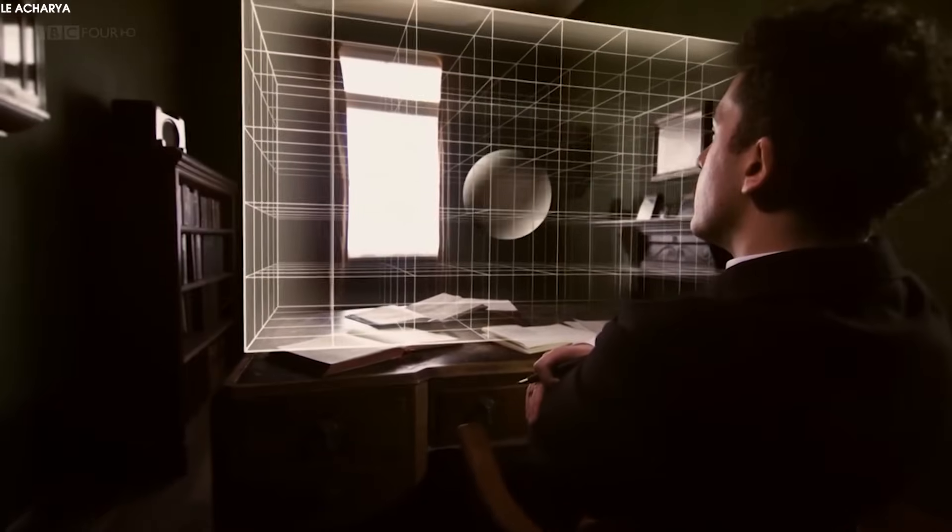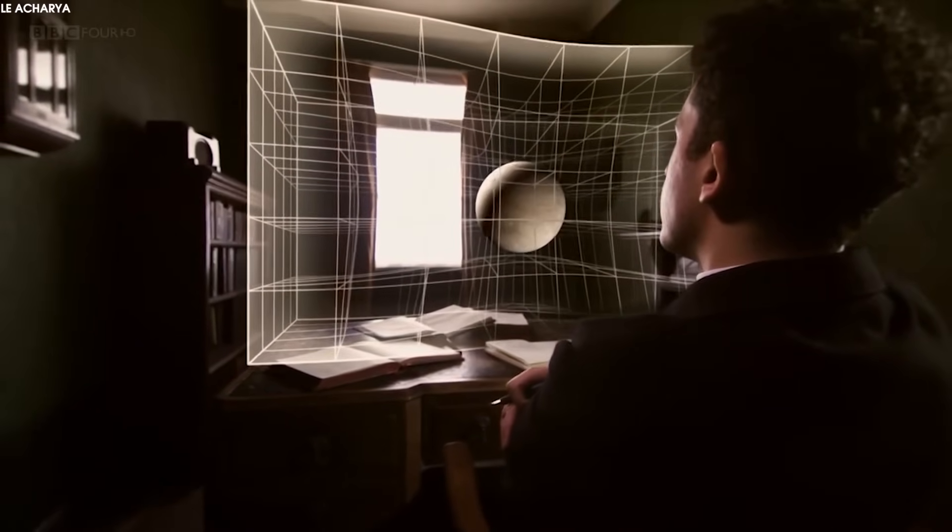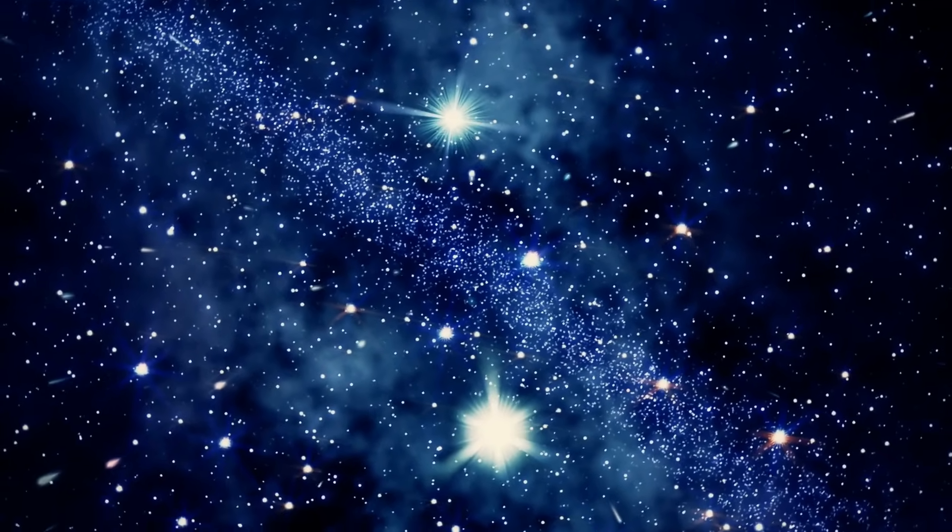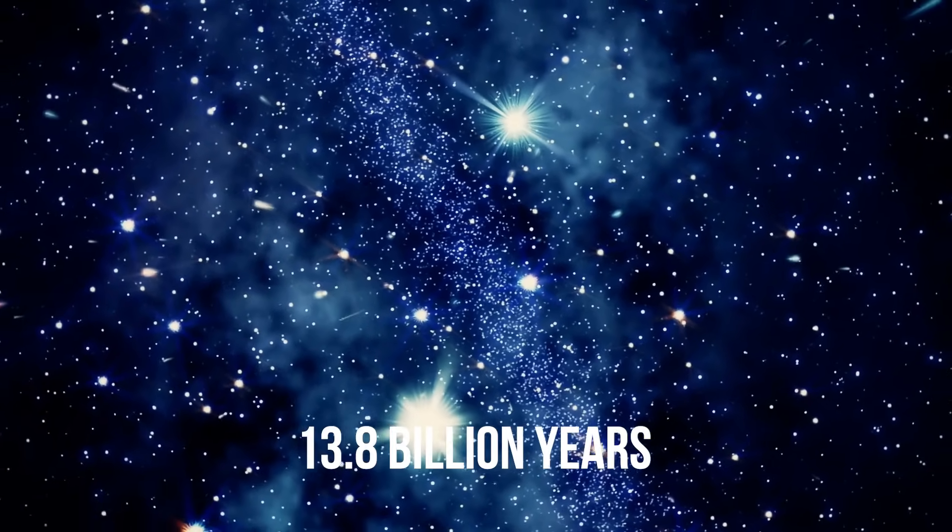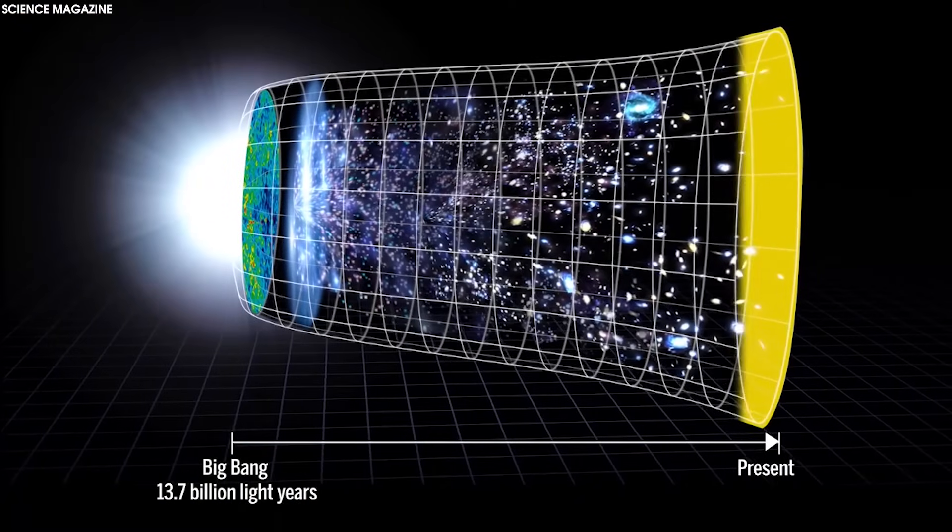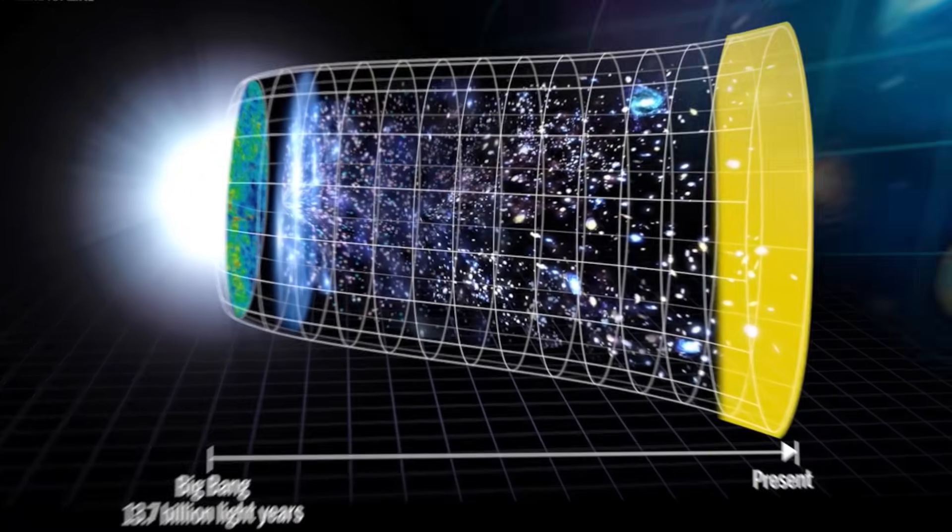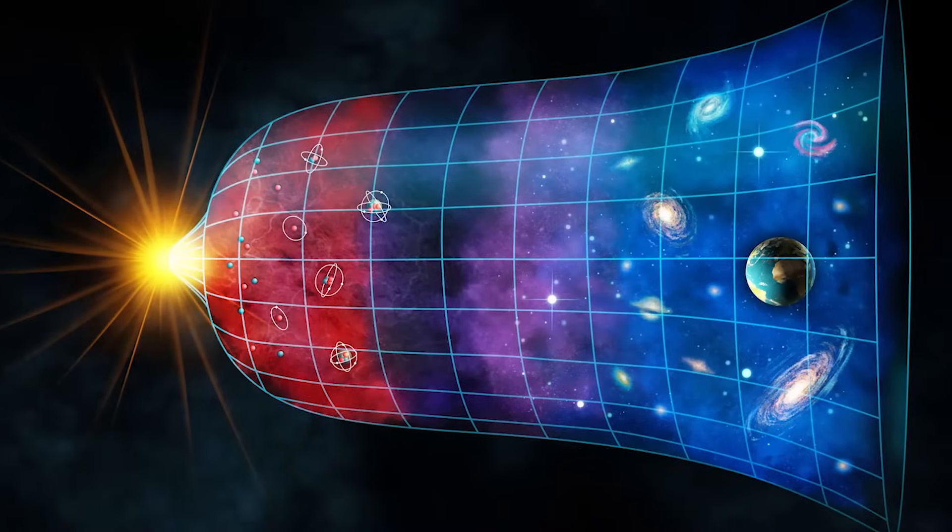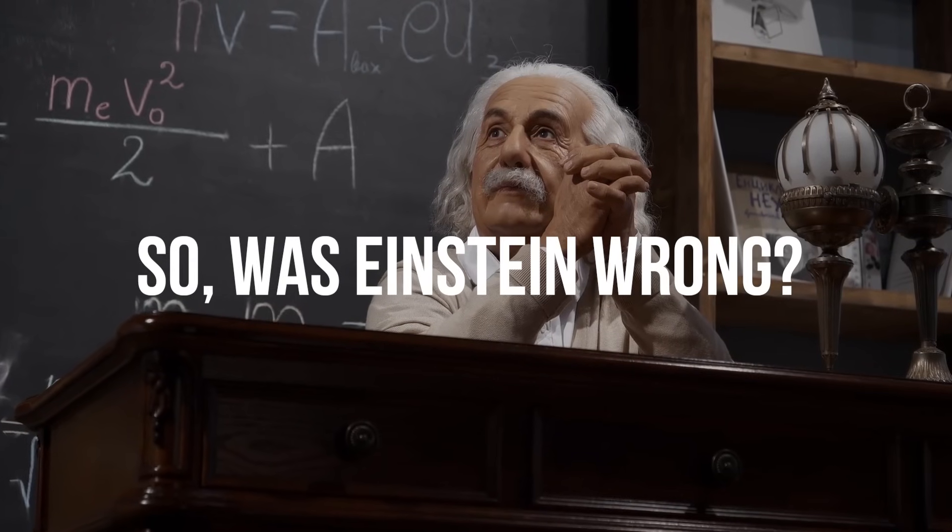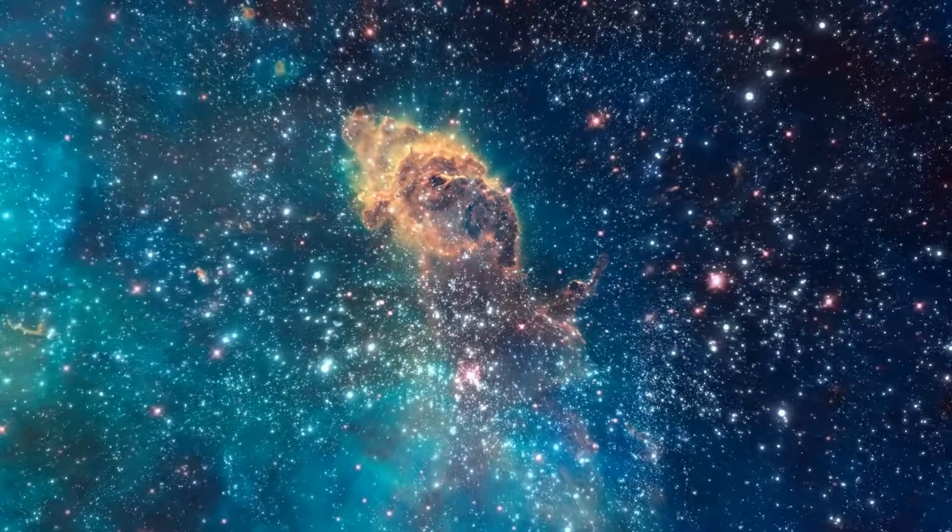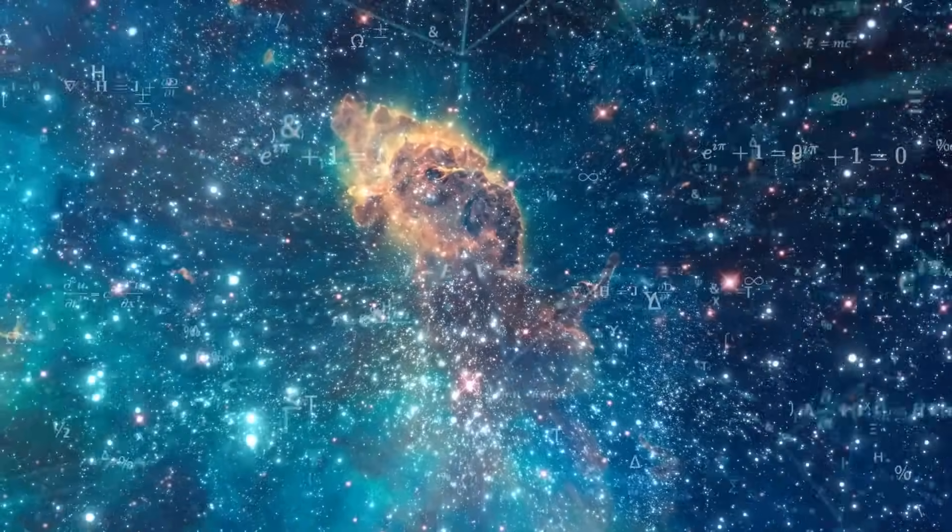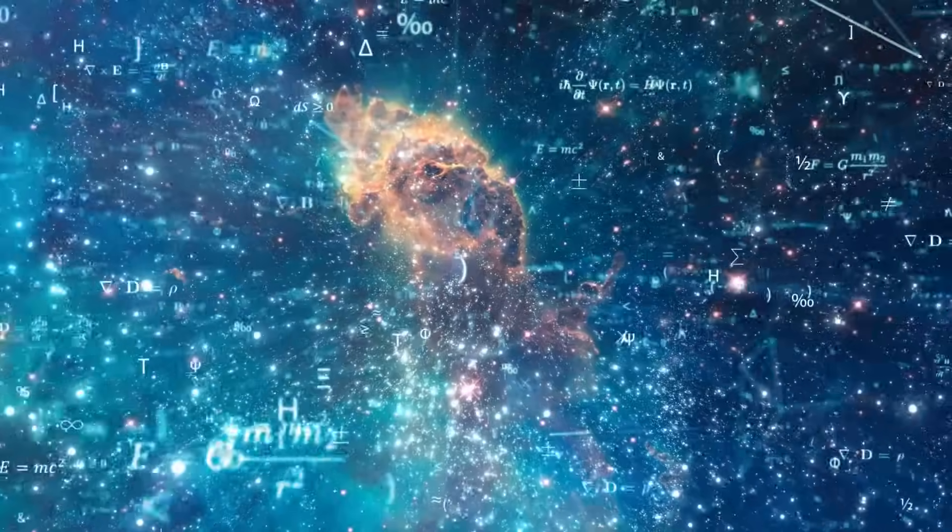However, the results suggest there may be problems with Einstein's work, which predicts how matter should have spread out over the 13.8 billion years since the Big Bang. The results of the new model, called the Dark Energy Survey, show significant differences from Einstein's predictions. So, was Einstein wrong? Join us as we dig deep into how the new discovery of the universe just debunks shortcomings of all modern theories.